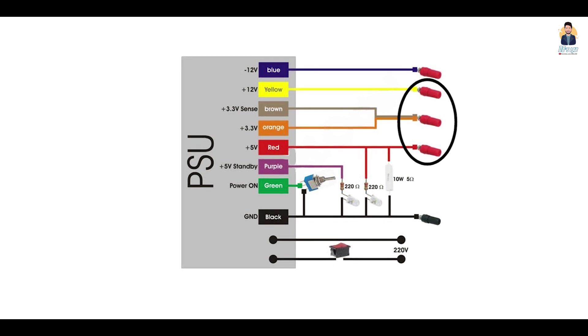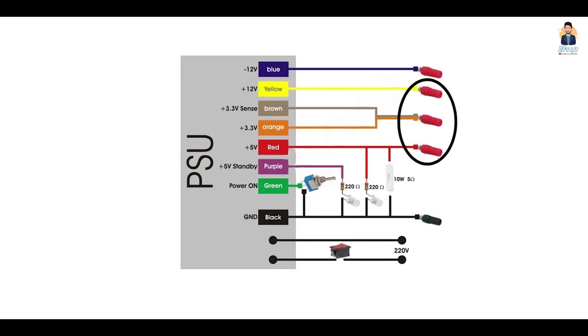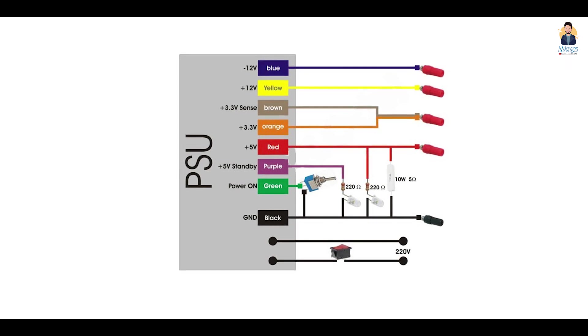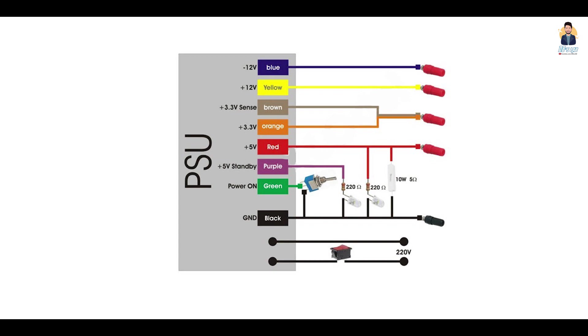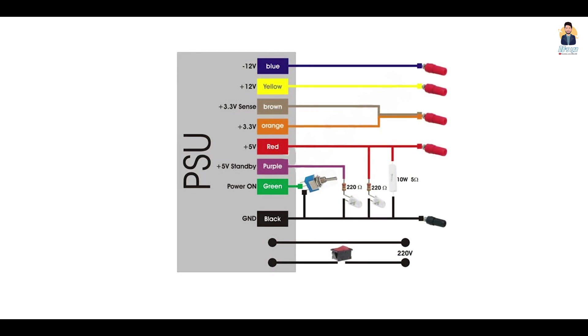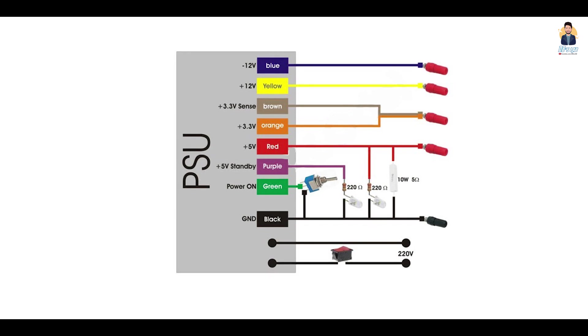Also the black wire has a separate binding post. Now the green wire is connected to the black wire through a switch. This switch turns on or off your power supply.